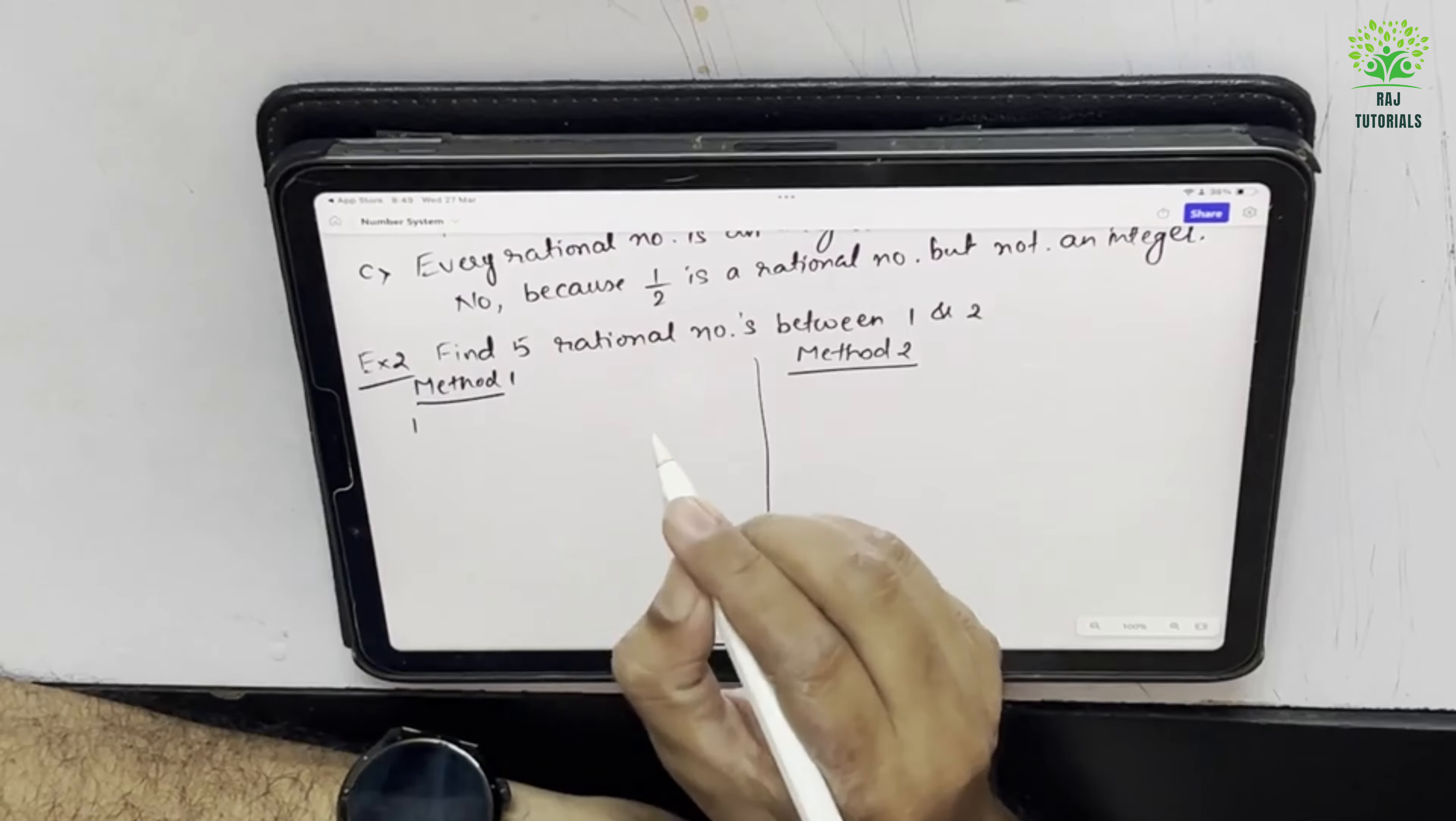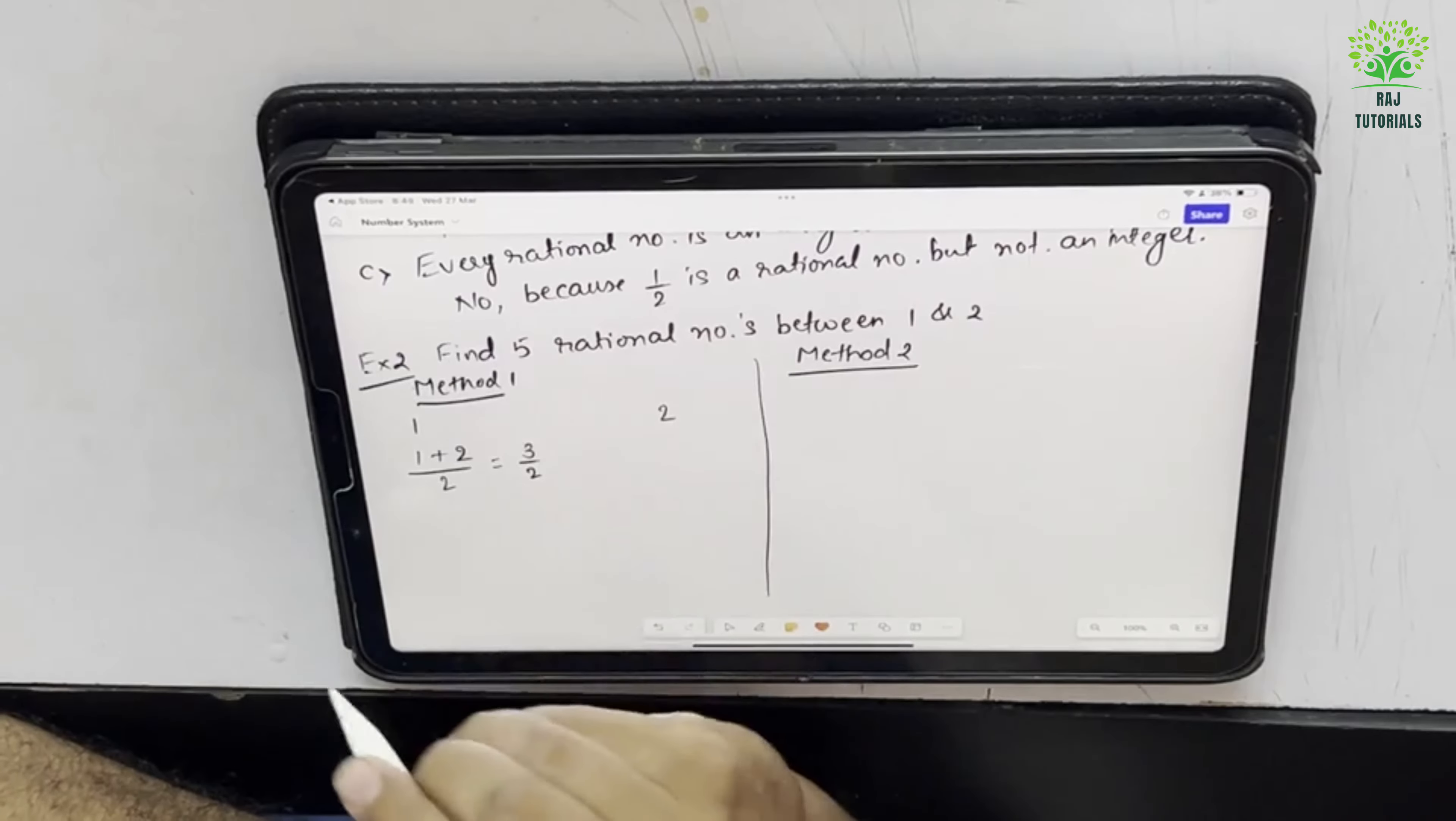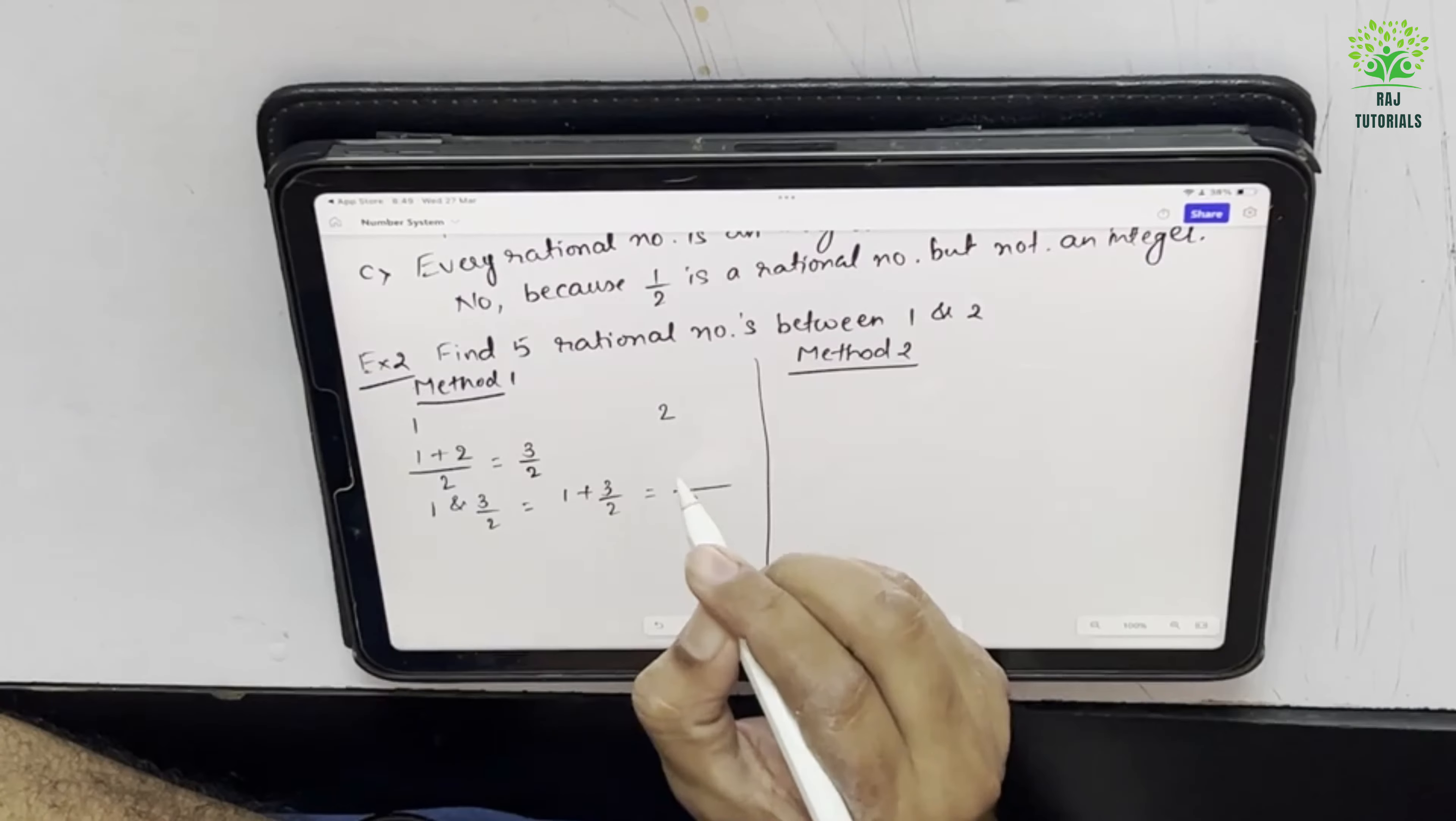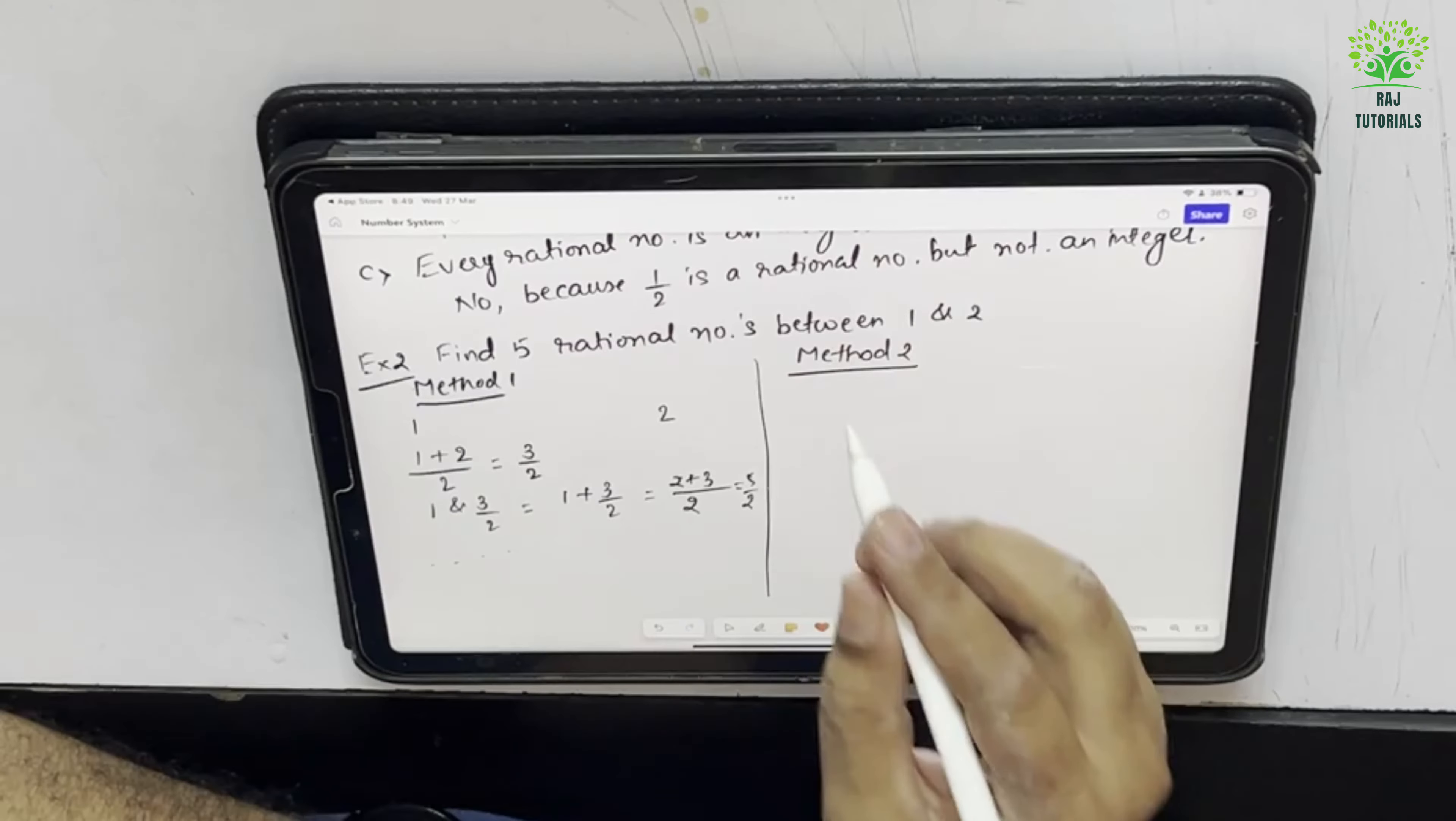See here he is saying if I want to find 5 rational numbers I can do like this. Between 1 and 2 I need, so I can add both of them divided by 2. So this will be 3 by 2. So it is between 1 and 2. Now if I take 1 and 3 by 2, again I can find a rational number 1 plus 3 by 2. LCM will be 2. So 2 plus 3, this will be 5 upon 2. So like this I can go on and find 5 rational numbers.